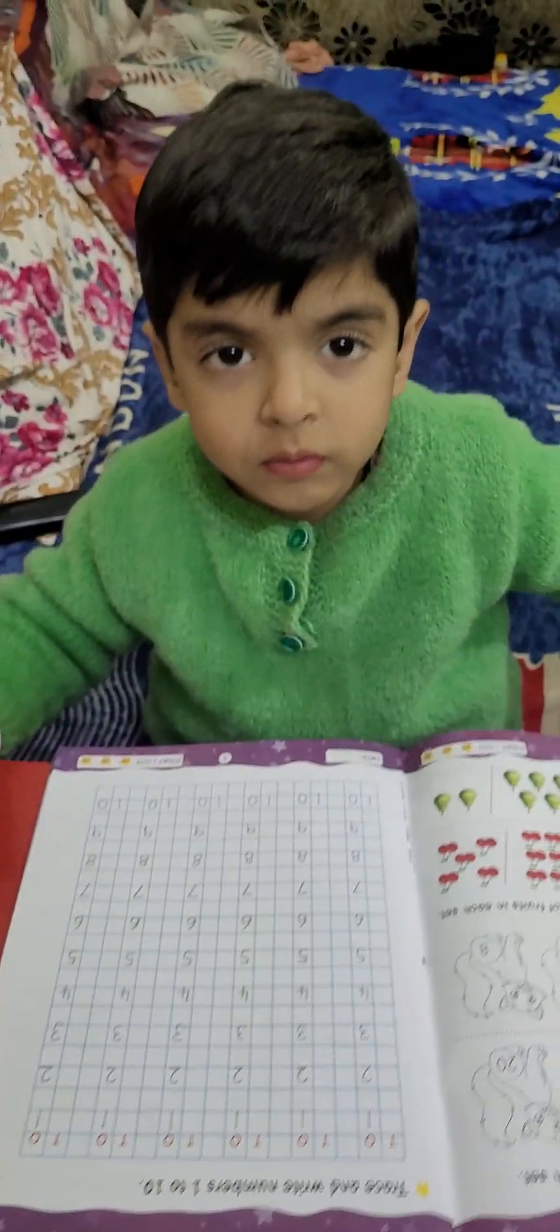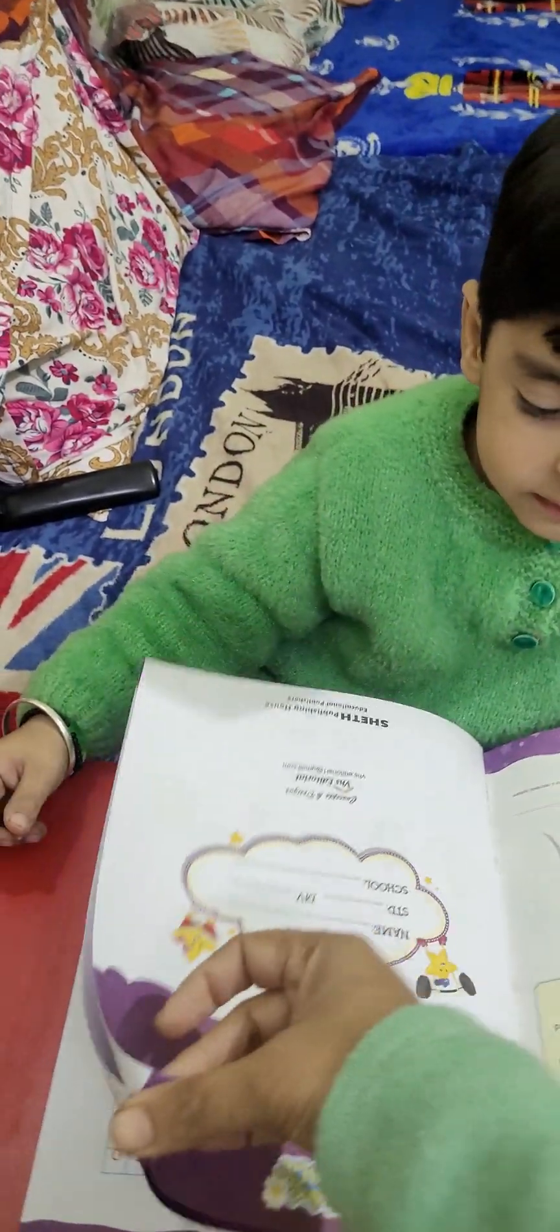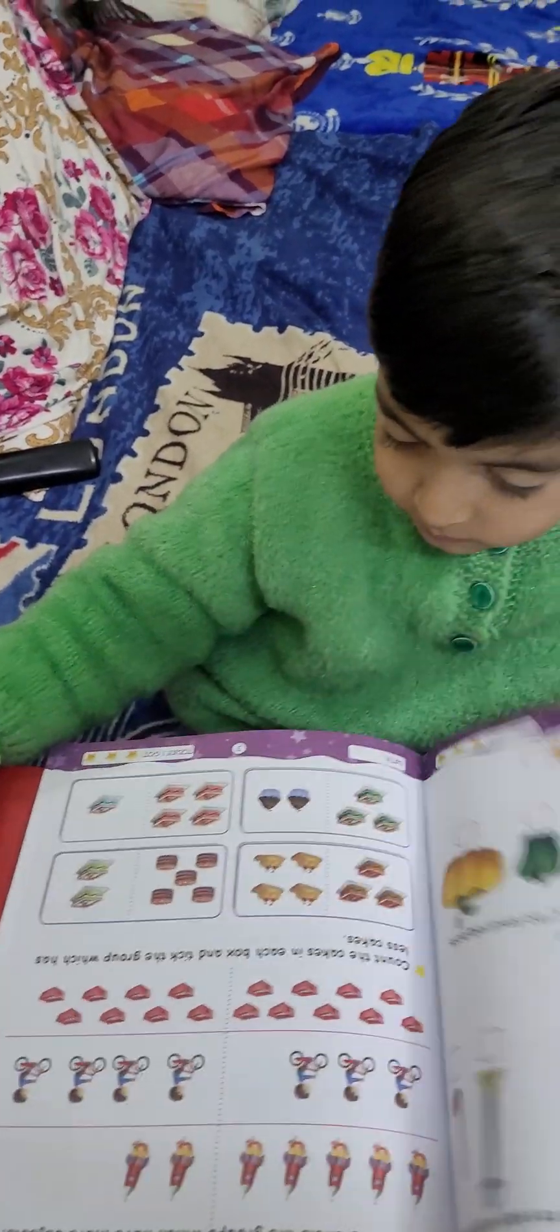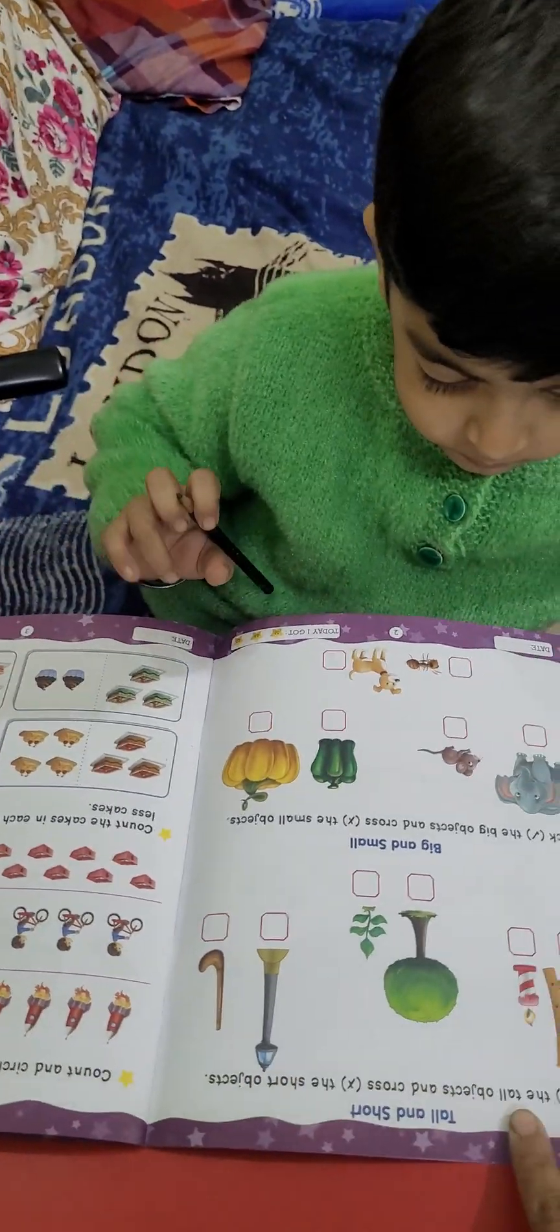Hello Vedansh. Hello. How are you? I'm fine. So, let's start the worksheet. Yes. Okay. Now, let's open the first one. Vedansh, here it is written. Tick the tall objects.